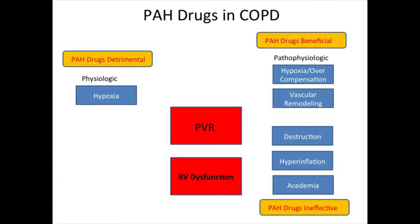If you look at where our drugs act: they are beneficial in the pathophysiologic portion — we know they deal with vascular remodeling. They are ineffective and have no effect on destruction, hyperinflation, and acidemia. And they may be conceivably harmful when dealing with hypoxia. So we're in a setup trying to use our drugs in COPD where in one case we're not beneficial, in one case we're detrimental, and only in one case are we beneficial.